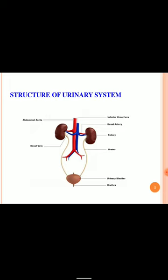This is the general structure of the urinary system. The urinary system receives major blood supply from the abdominal aorta, renal artery and inferior vena cava. It has parts like kidneys, ureter, urinary bladder and urethra.